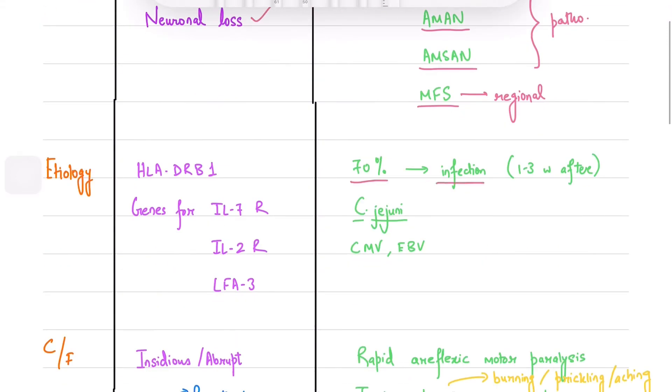70% of GBS cases occur due to infection, either respiratory or GI. Campylobacter jejuni is an association very commonly seen in exams. CMV and EBV are also associated with GBS. GBS will generally follow 1-3 weeks after an infection.